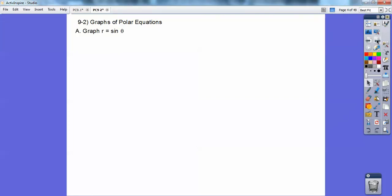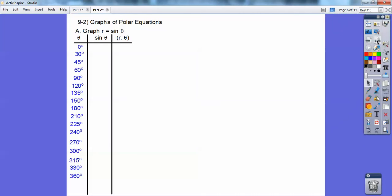So we're going to graph r equals the sine of theta. I'm going to set up a t-chart right here, and I'm going to plug in all these angles for my theta into sine. So take the sine of all of those.